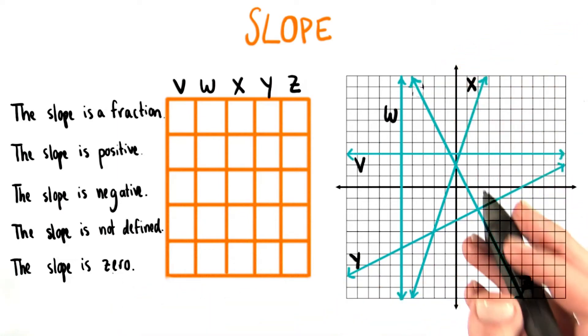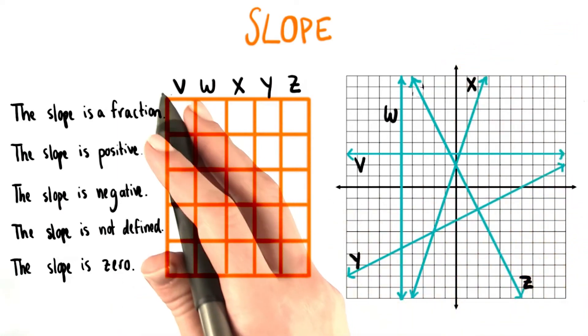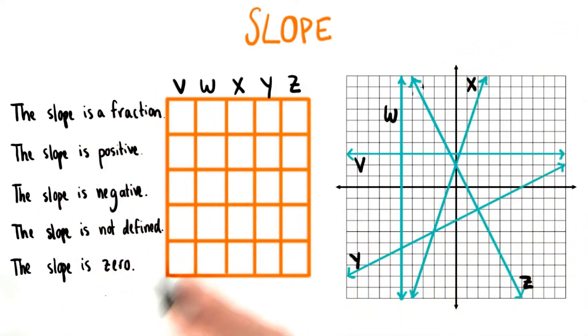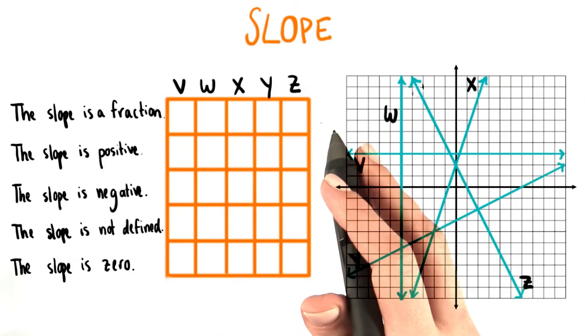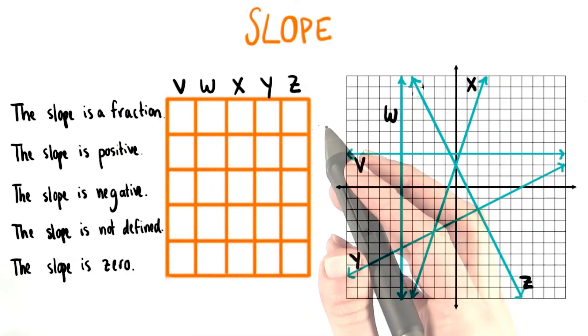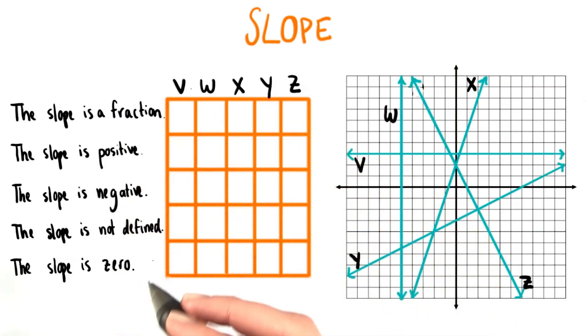I'd like you to pick which of these categories each of these lines falls into. For some of these lines, there may be more than one category.